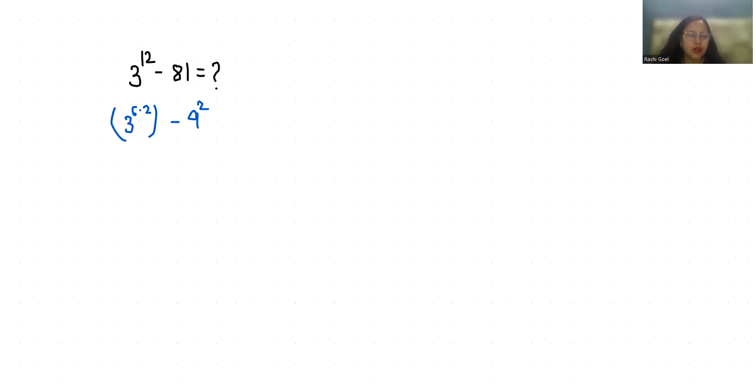Now I am going to use the identity a square minus b square which is a plus b times a minus b. So 3 power 6 plus 9 times 3 power 6 minus 9.